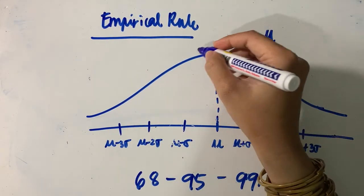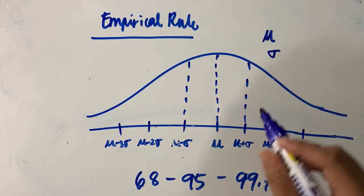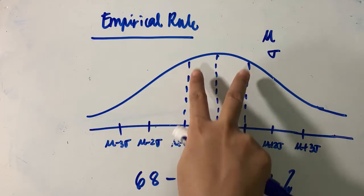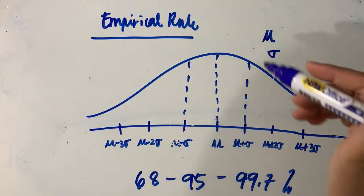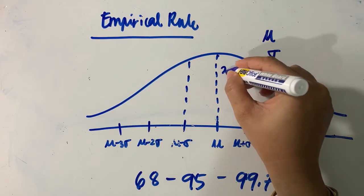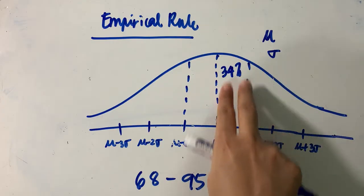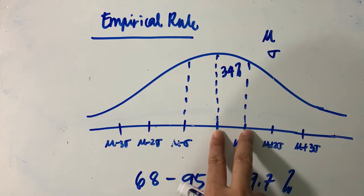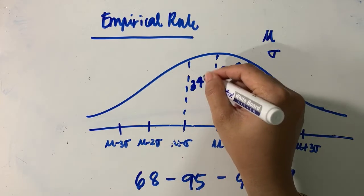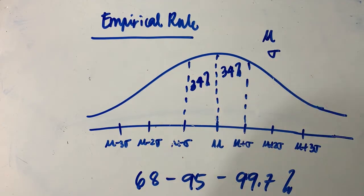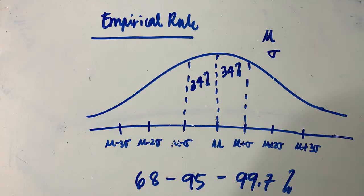So approximately 68% of your distribution is found within this region. Since the curve is symmetric, the 68% will be divided into two equal parts: 34% is found one standard deviation above the mean, and 34% is found one standard deviation below the mean, giving a total of 68%.